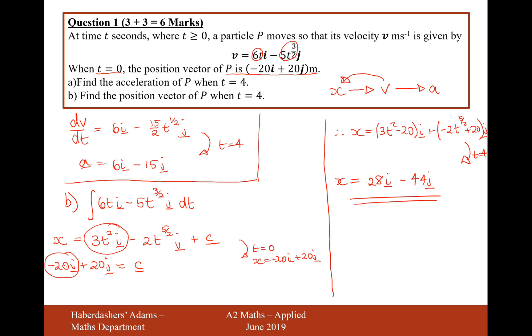And there we are, that's the position vector of p when t equals 4. And there we are, that's the answer to the first of these mechanics questions here, worth a total of 6 marks. Let's now move on to the second mechanics question.